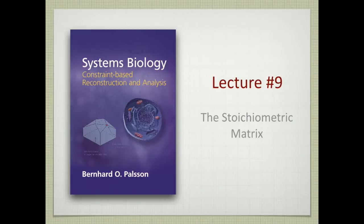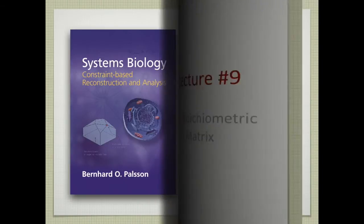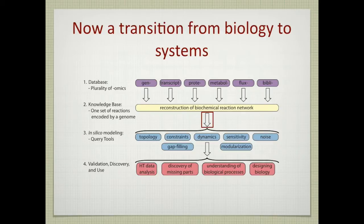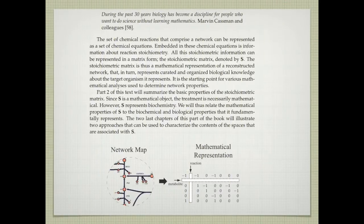There will be four or so lectures in this category. The first one is on the stoichiometric matrix. I thought I should start with the diagram from the first lecture to get us oriented. The creamy-colored box, number two, is the reconstruction process we've gone through. In part two of the class, we go from level two to level three — mathematically representing the reconstruction so we can do all the computations shown in blue in the third step.